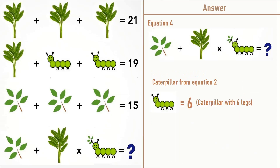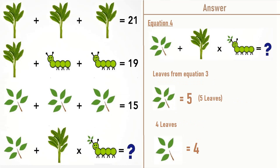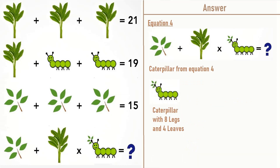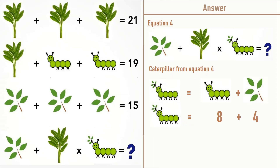The caterpillar from equation 2 has 6 legs, equal to 6. A caterpillar with 8 legs is equal to 8. The leaves from equation 3 has 5 leaves equal to 5, and the leaves on the caterpillar in equation 4 has 4 leaves equal to 4. So the caterpillar in equation 4 has 8 legs and 4 leaves, which equals 8 plus 4, equal to 12.